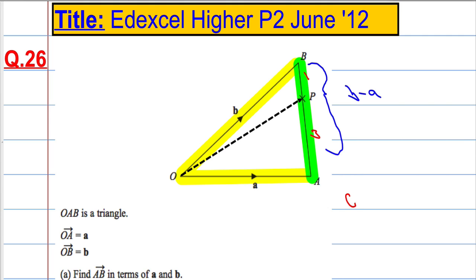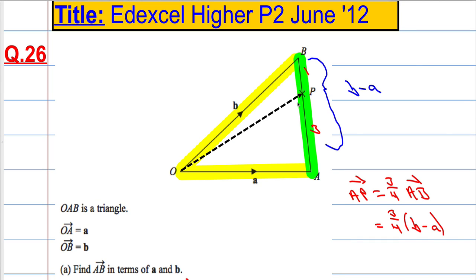So the vector, in fact, let's write it down, the vector AP, from A to P, is going to equal 3 quarters of the vector AB. So that's going to equal 3 quarters of B minus A. So now what we can say is that is the vector 3 quarters B minus A. So how am I going to get O to P using all the information I had?